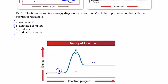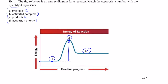Letter B — the activated complex is represented by number 3. That's that intermediate activated complex formed just before it decomposes into products. Letter C — the products are represented by number 4. Finally, the activation energy is the energy required to form the activated complex from the reactants, so number 1 is the activation energy.